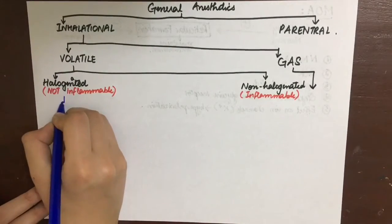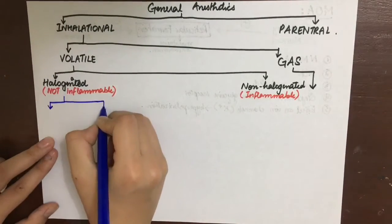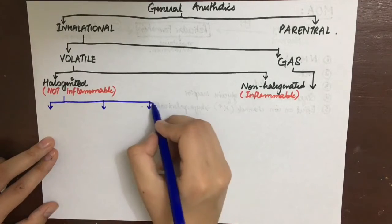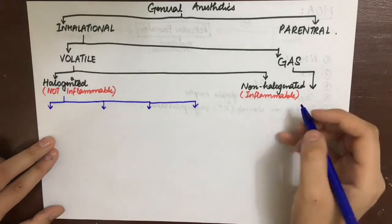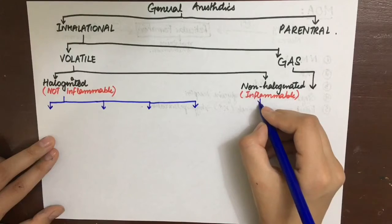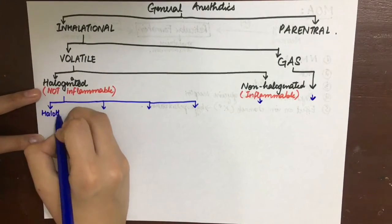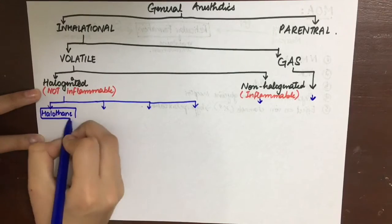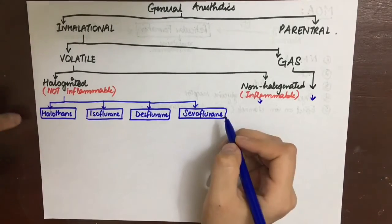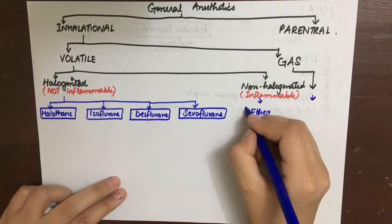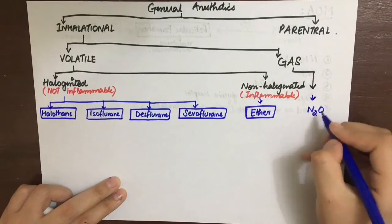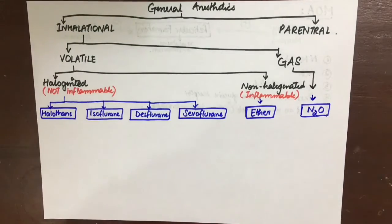The halogenated ones are not inflammable while the non-halogenated are inflammable. The main four halogenated general anesthetics are halothane, isoflurane, desflurane, and sevoflurane. The non-halogenated inflammable is chiefly ether and the gas is nitrous oxide.